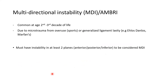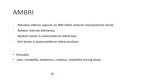Multidirectional instability (AMBRI): common age group is the second to third decade due to microtrauma from overuse sports or generalized ligament laxity, such as Ehlers-Danlos or Marfan syndrome. Must have instability in at least two planes — anterior, posterior, or inferior — to be considered multidirectional. On MRI, there is a patulous inferior capsule — patulous meaning flat and thin — and rotator interval deficiency. A Bankart lesion can be present at the anterior inferior, and a Kim lesion is similar but located at the posterior inferior. Clinically: pain, instability, weakness, crepitus, and possibly instability during sleep.